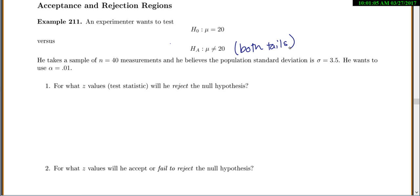So he takes a sample of n equals 40 measurements, and he believes the population standard deviation is 3.5, and he wants to use alpha equals 0.01. So before we actually even look at the data, what we can do is we can come up with values in advance where we will accept or reject our null hypothesis. So for what values of z, we're saying for what test statistics, would he reject the null hypothesis? And so we would reject if the p-value or the area in both tails is less than alpha. So less than alpha equals 0.01.